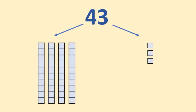And another two-digit number, this time 43. The first digit tells us that there are four tens, and the second digit tells us that there are three ones. Which looks like this: four groups of ten and three ones.